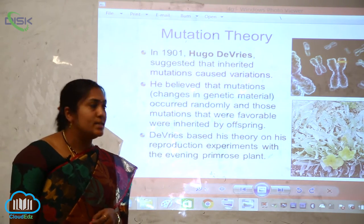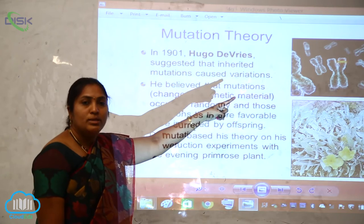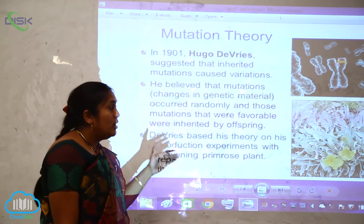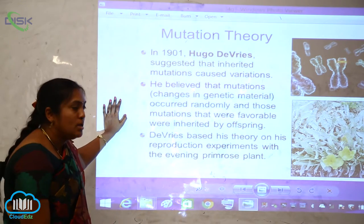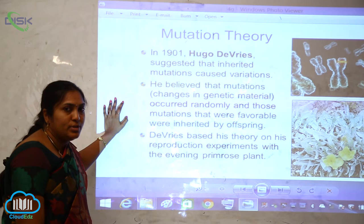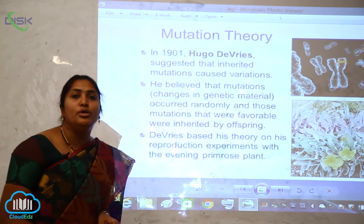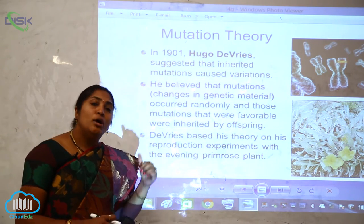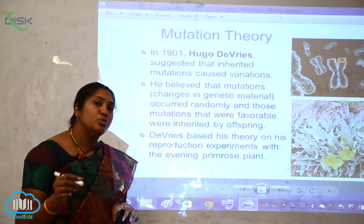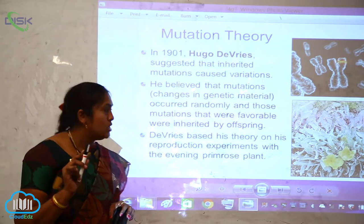The third theory of evolution is the mutation theory, which is very important. Chromosomes are the genetic material and the vehicles for passing traits from one generation to another. In 1901, Hugo de Vries proposed the mutation theory, stating that mutations are caused by variations. He believed mutations are not a continuous process.